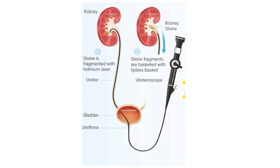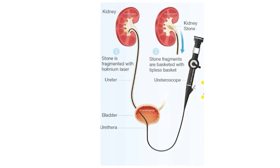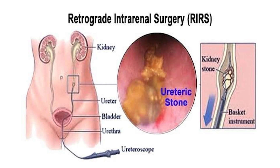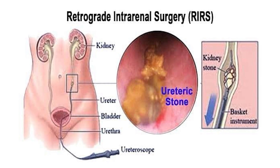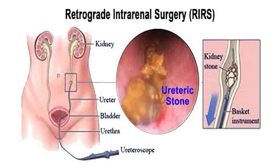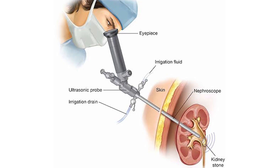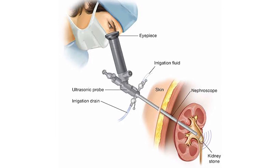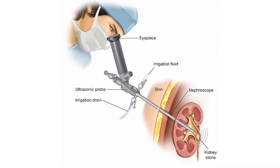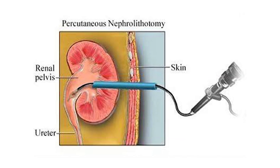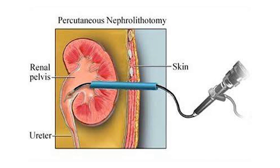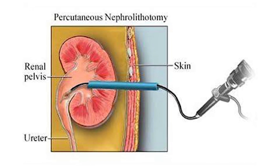After that, we use RIRS — retrograde intrarenal surgery — where we can go with a flexible scope into the kidney. The limitation of RIRS is stone size; it cannot be used for very large or complex stones. The gold standard for larger or more complex stones is PCNL — percutaneous nephrolithotripsy. Although the patient may have to stay longer in the hospital as the kidney is punctured, it offers a solution for bigger stones with more complex involvement.